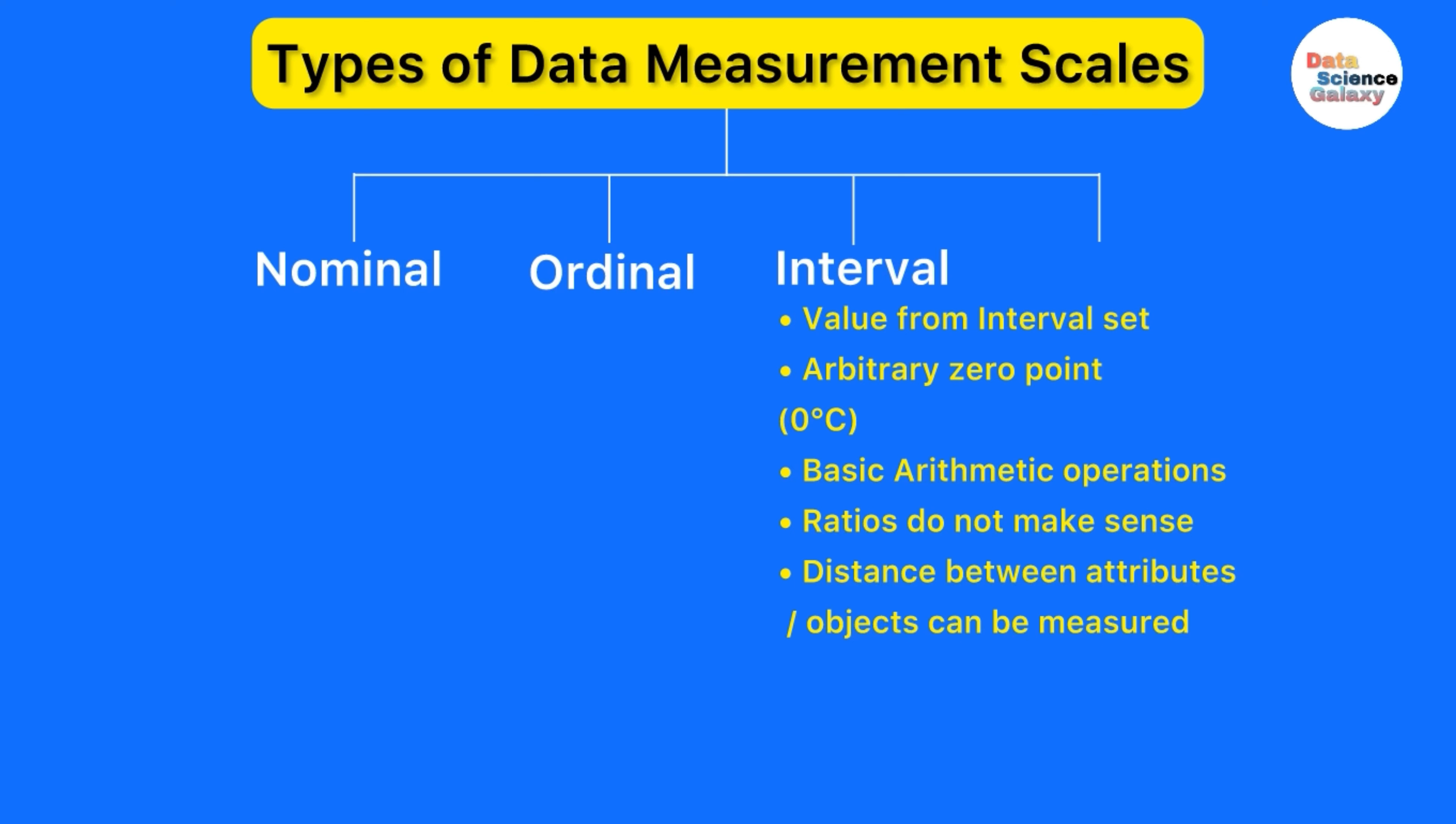However, I can say that an object at 60 degrees Celsius is 30 degrees Celsius more than 30 degrees Celsius. That makes sense. Distance between the attributes or objects can be measured. That is about interval scale.